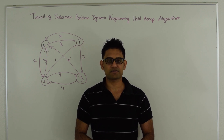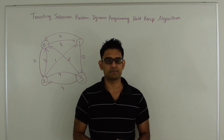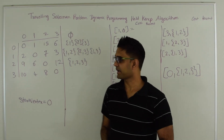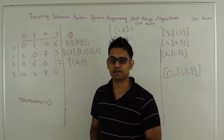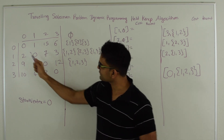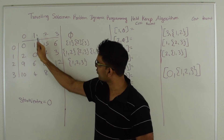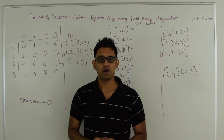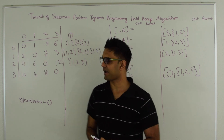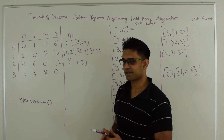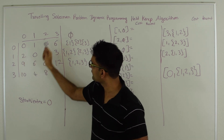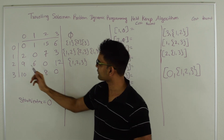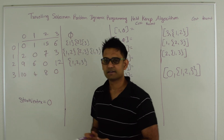So next let's try to understand this algorithm with the help of an example. Here I'm representing my graph as a distance matrix. For example, the cost of going from 0 to 1 is 1, and the cost of going from 0 to 2 is 15, and so on. Also notice it's an asymmetric graph — the cost of going from 1 to 2 is 7, which is not the same as the cost of going from 2 to 1, which is 6.